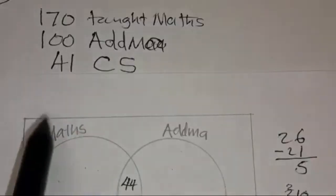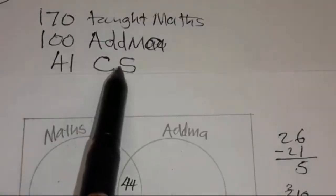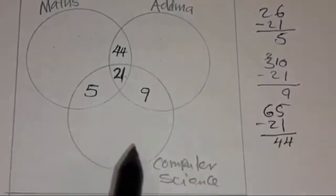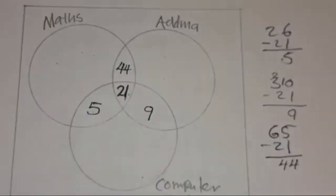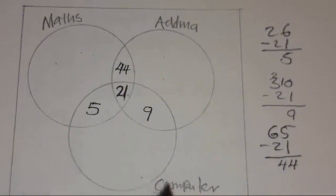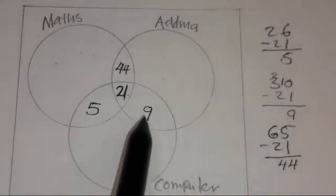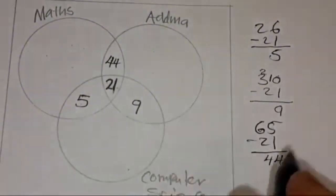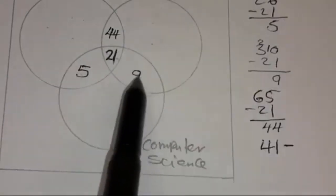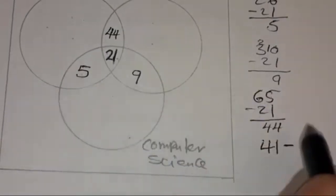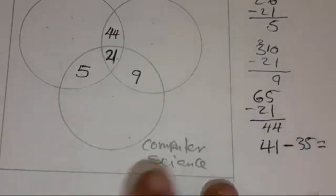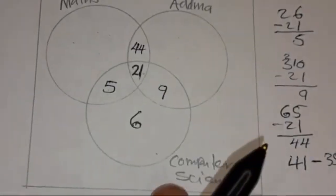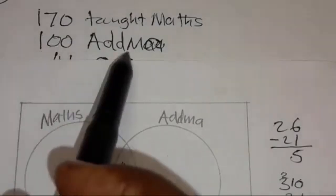They are saying 41 teachers taught computer science. The set for CS is this one. To find the number of teachers that taught CS only, add 9 plus 21 plus 5, which gives 35, then subtract from 41: 41 minus 35 equals 6. So 6 teachers taught computer science only.